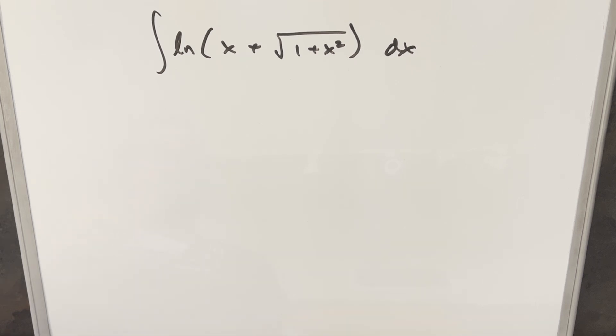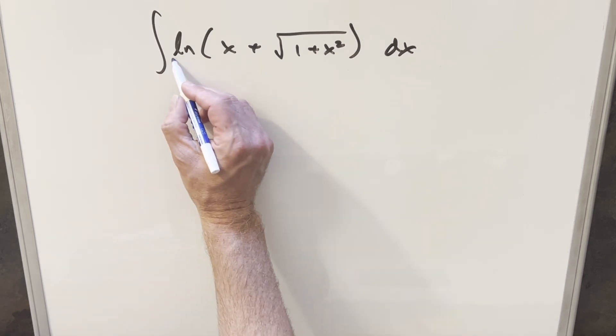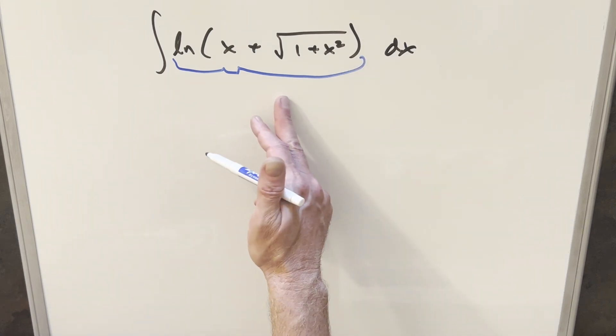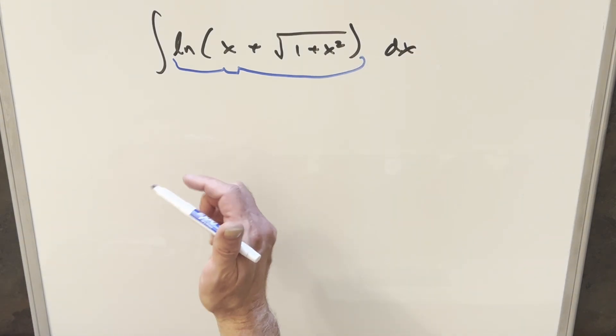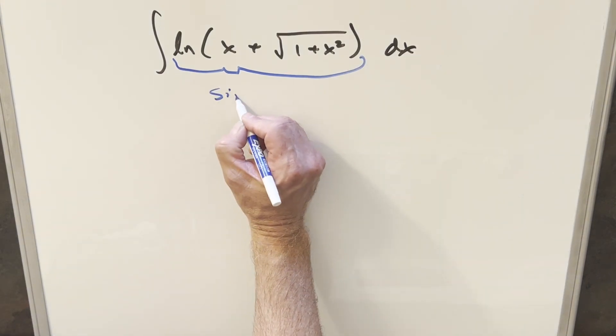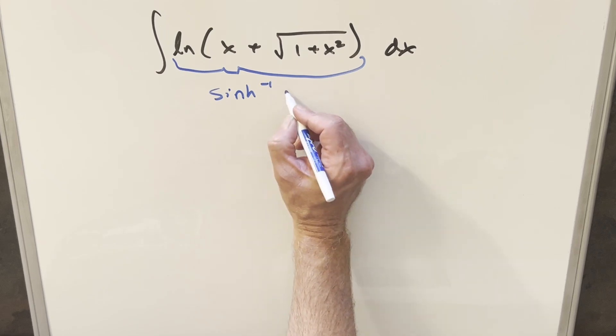Okay, I only really know one good way to handle this, and it's just recognizing what is this whole thing here. Because I think if you just started trying normal methods, it's not that easy. But what we want to recognize is this is actually the same thing as inverse sinh of x.